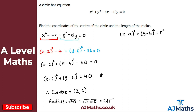It's absolutely fine to leave the radius as root 40 if simplification isn't requested. So our center is (2, 6) and the length of the radius is 2 root 10.